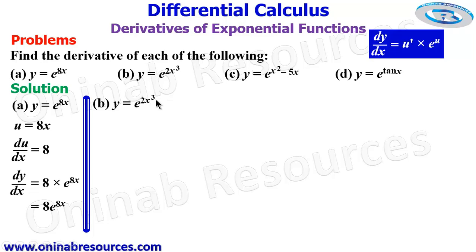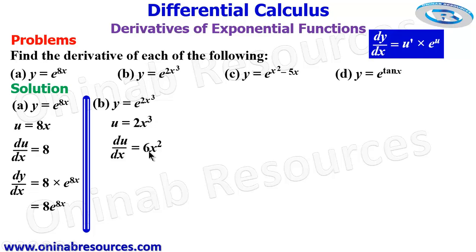We then go to problem b: y equals e raised to power 2x cubed. In this case we are going to make the entire exponent our u, so u equals 2x³. We then differentiate with respect to x: 3 times 2 gives 6, so we have 6x squared, because we reduce the power by 1.